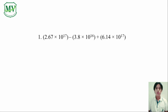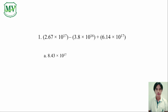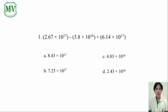Number 1: 2.67 x 10 raised to the power of 17, minus 3.8 x 10 raised to the power of 16, plus 6.14 x 10 raised to the power of 17. A: 8.43 x 10 raised to the power of 17. B: 7.23 x 10 raised to the power of 17. C: 4.83 x 10 raised to the power of 16. And D: 2.43 x 10 raised to the power of 16. Which letter has the correct answer? Can you guess the answer?